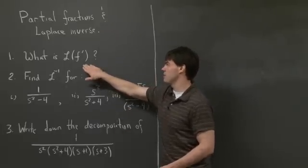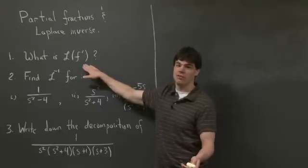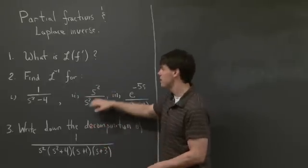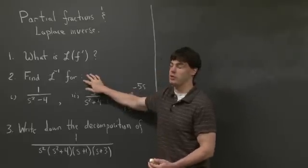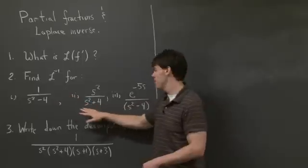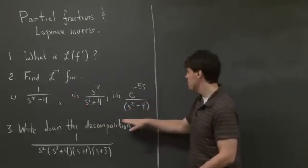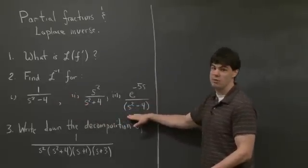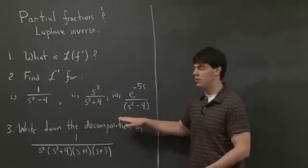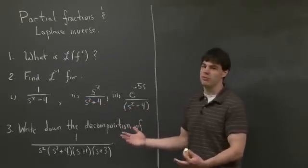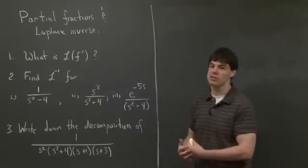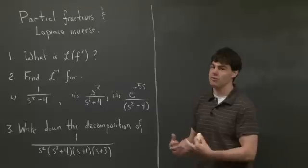So just as a warm up, we're asked to recall what the formula is for the Laplace transform of f prime in terms of the Laplace transform of f. In the second part, we're asked to find the inverse Laplace transform for three different functions: 1 over s squared minus 4; s squared divided by s squared plus 4; and e to the minus 5s divided by s squared minus 4. None of these functions appear in the lookup table for a Laplace transform, so in each case we have to use partial fractions to massage these functions into something which we do know the Laplace transform inverse for.